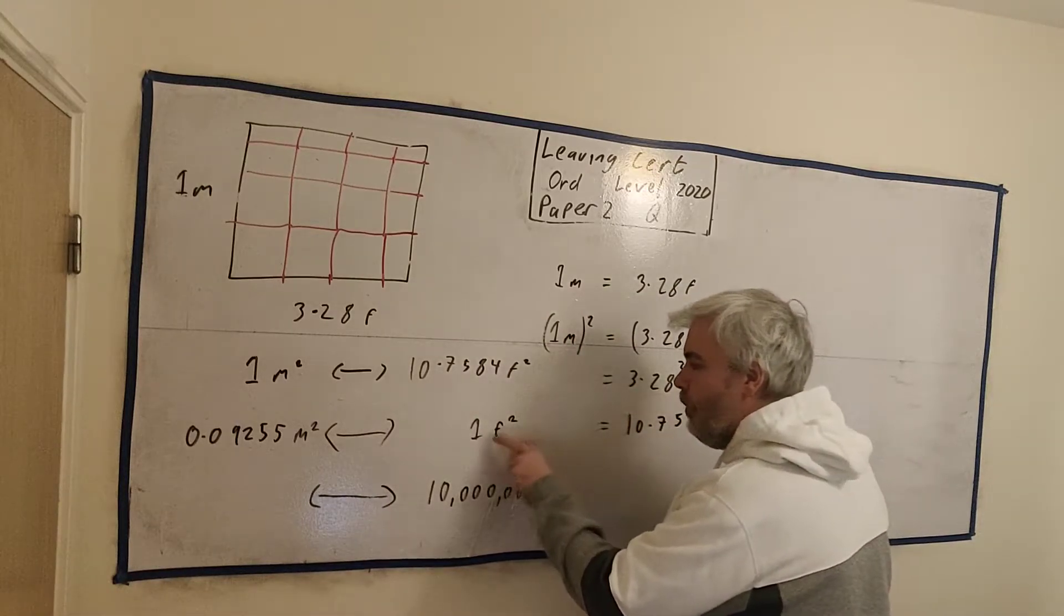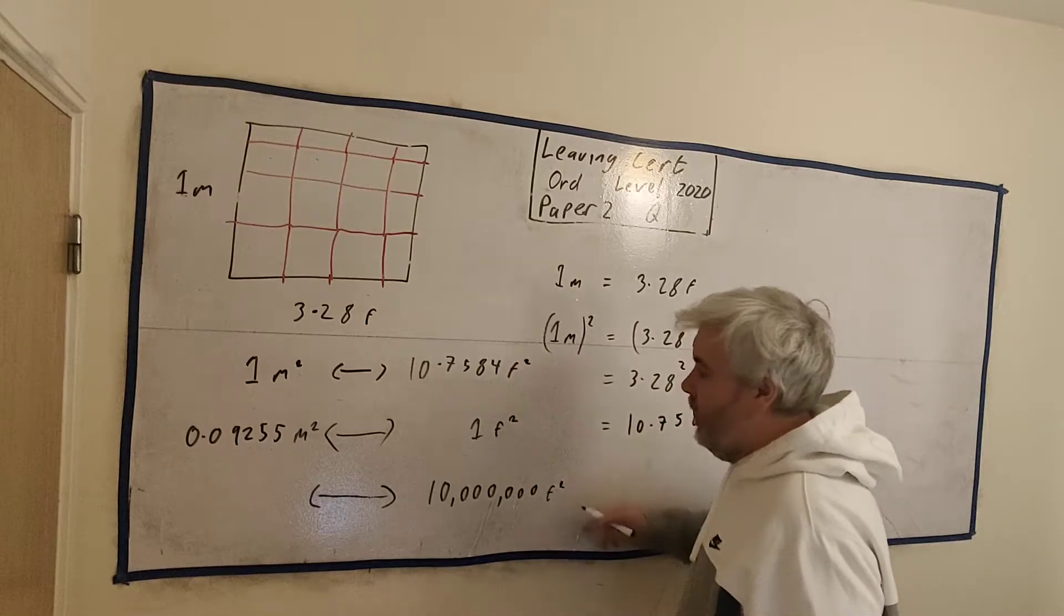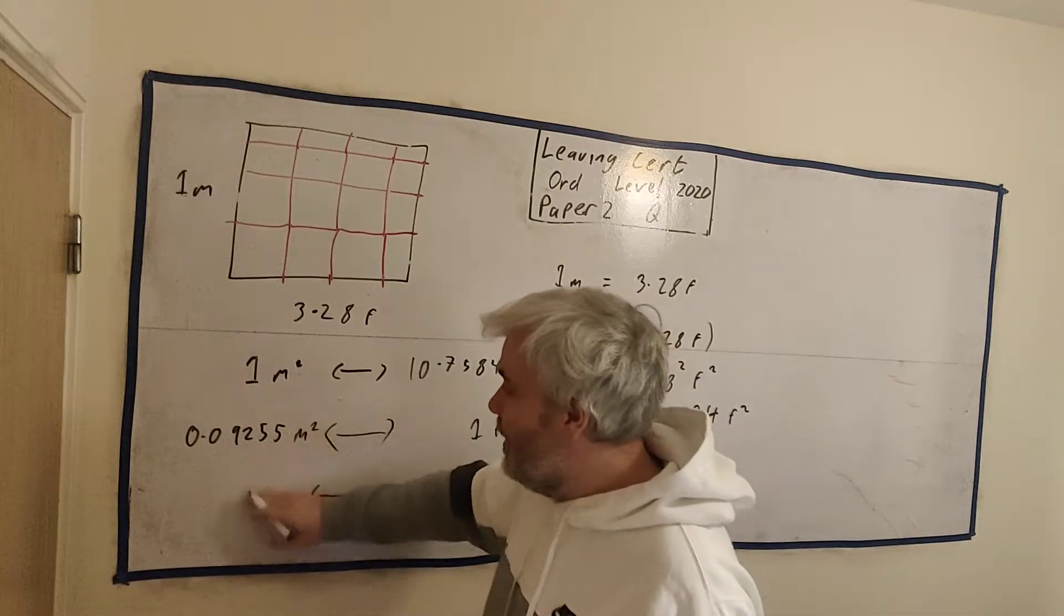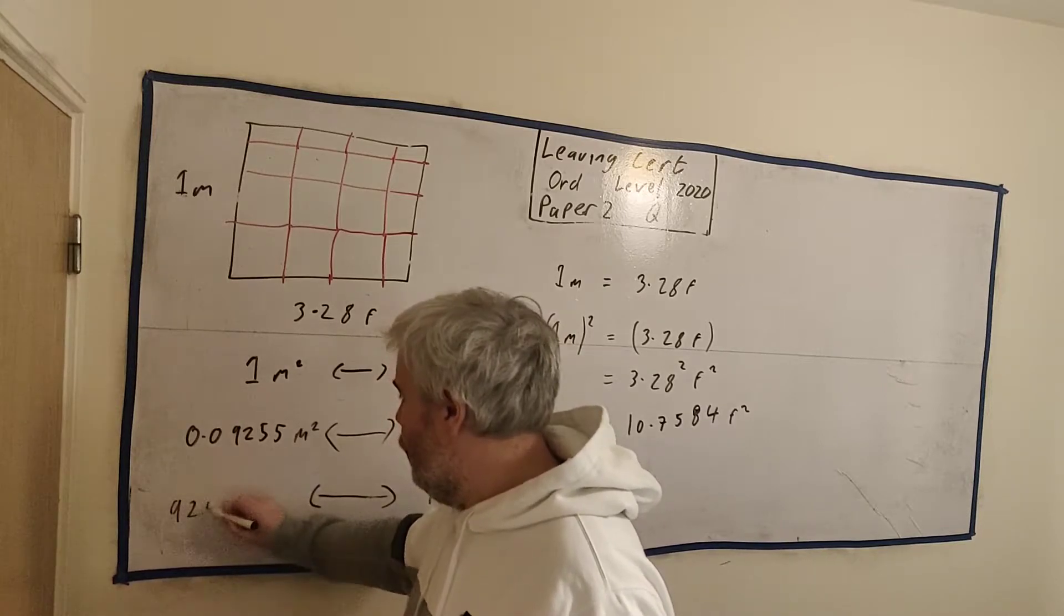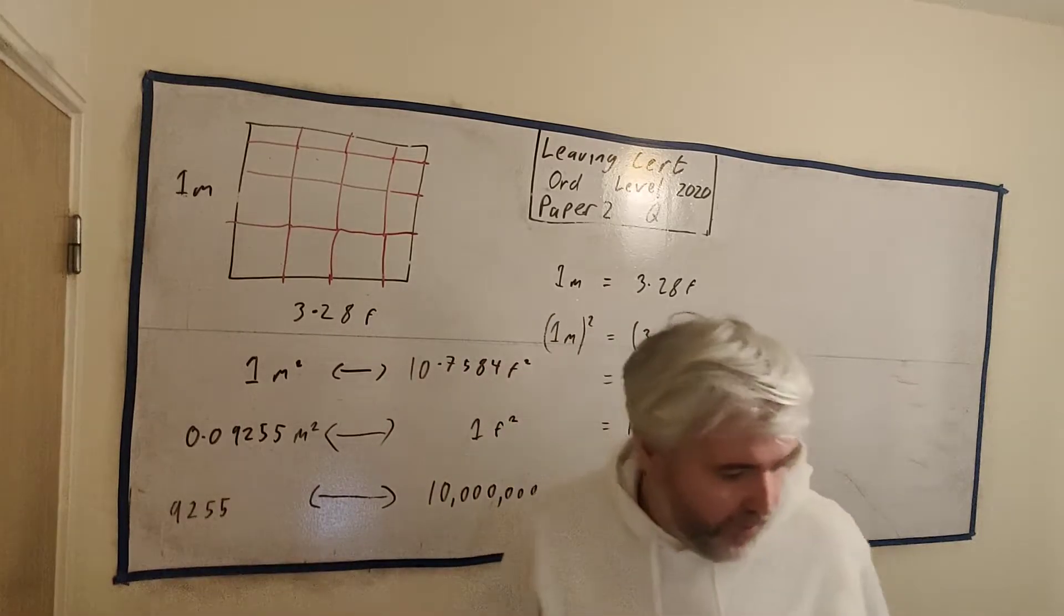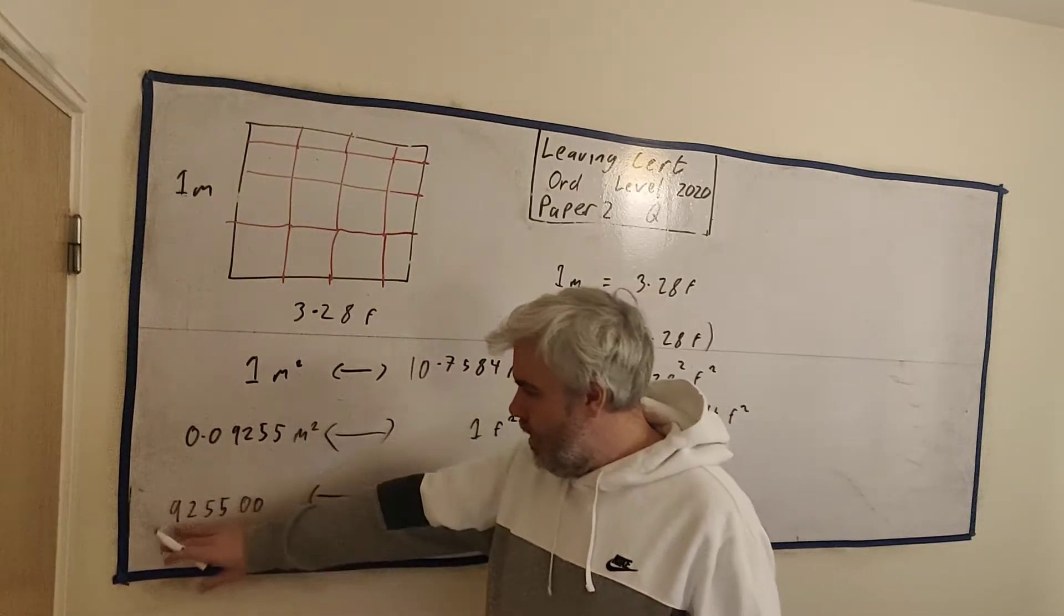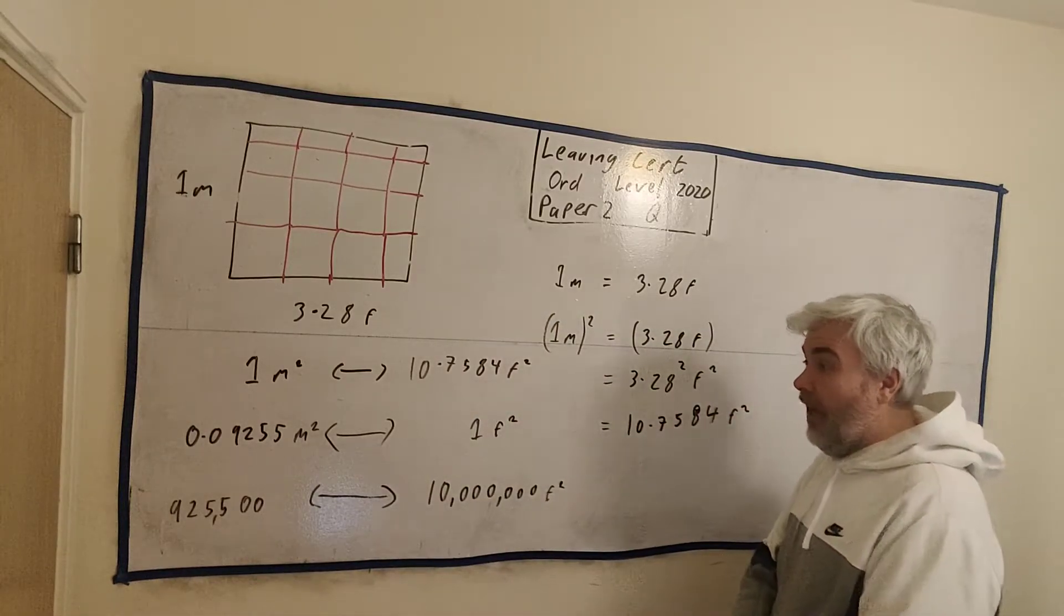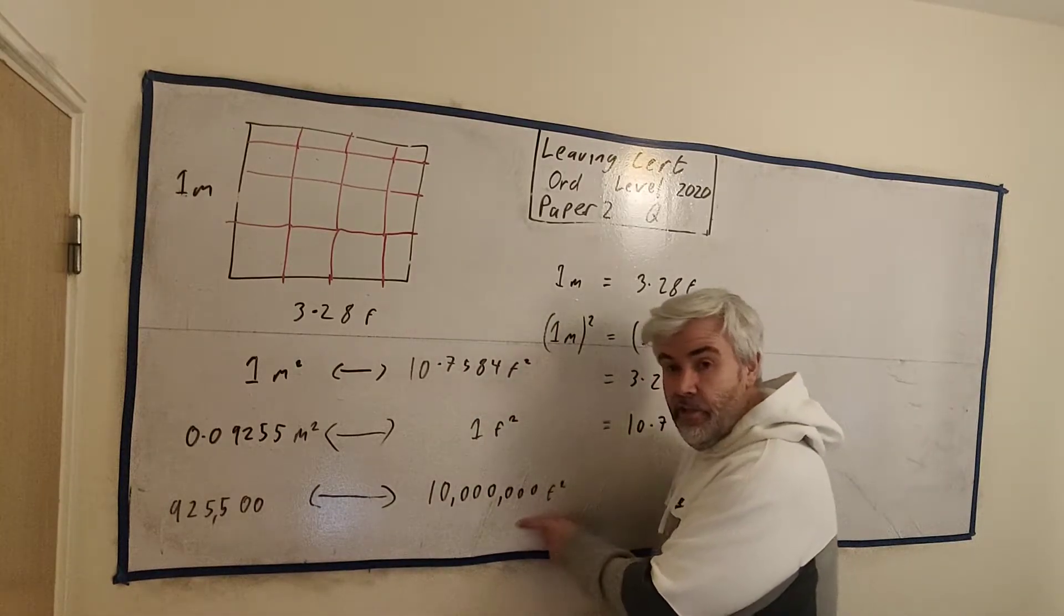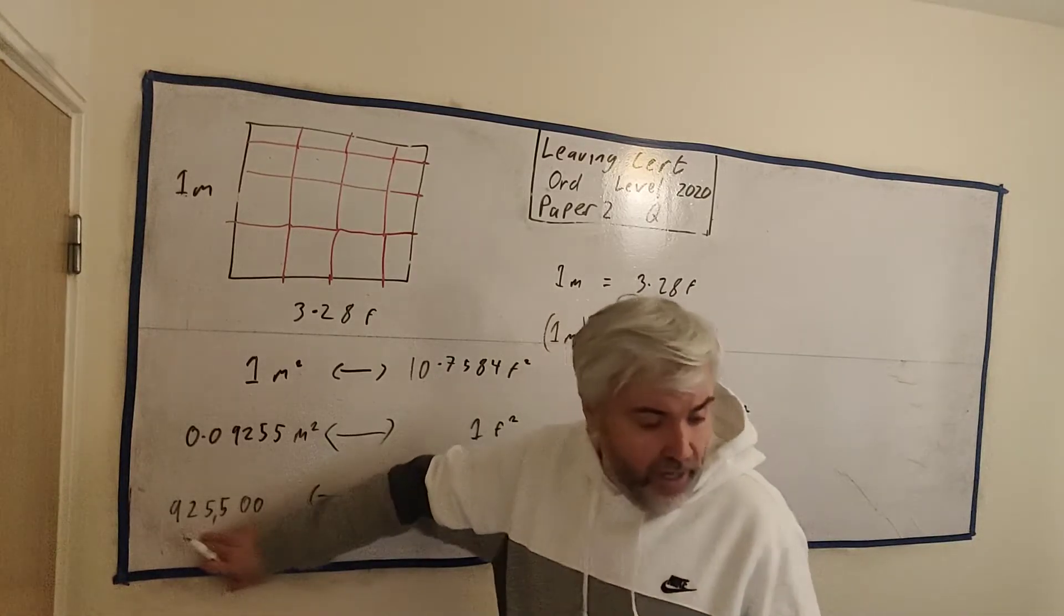It's now quite easy to go from 1 foot squared to 10 million feet squared. Just multiply it by 10 million. Multiply this by 10 million. I'll get 925,500. Actually, this would be a good example why it would have been easier to use scientific notation.